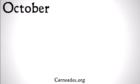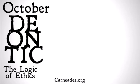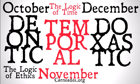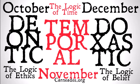This series is going to be broken up by months. The first month we're going to be looking at Deontic Logic in October — the logic of ethics, what's good and bad, what you should do and what you shouldn't do. In November we're going to be looking at Temporal Logic, the logic of time, and in December we're going to be looking at Doxastic Logic, the logic of belief. Each of the months is going to be on its own and separate from the other months, so you don't need to watch October's videos to understand November's.